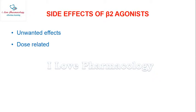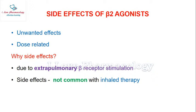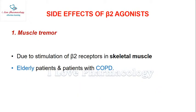These side effects are unwanted effects that are dose-related. They occur mainly due to extra-pulmonary beta receptor stimulation — meaning receptors present outside the respiratory system get stimulated. These side effects are not common with inhaled therapy but are quite common with oral or intravenous administration.